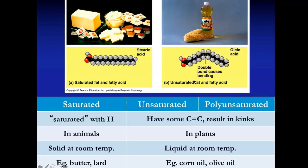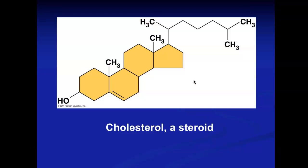Unsaturated fats are found in plants, are liquid at room temperature, and examples are corn oil and olive oil. Saturated fat is solid because the straight tails pack tightly together, while double bonds in unsaturated fats prevent packing, keeping them liquid. I will give you questions asking whether a molecule is saturated or unsaturated and whether it's solid or liquid at room temperature.